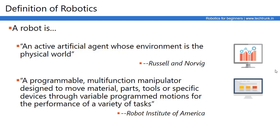According to Stuart Russell and Peter Norvig, a Robot is an Active Artificial Agent whose environment is the physical world. It means an Active Artificial creature, or a Machine, which can interact with the physical environment and the physical world.